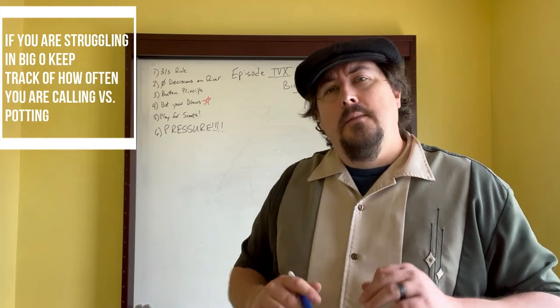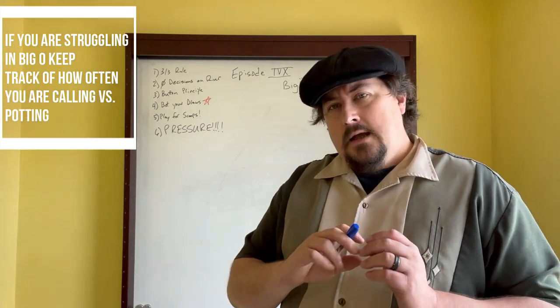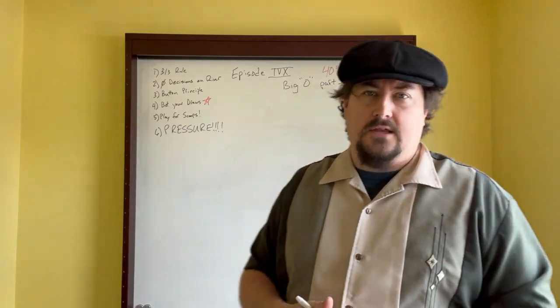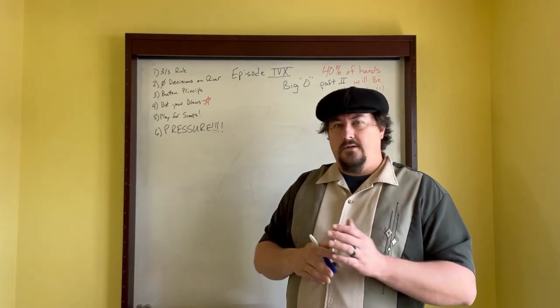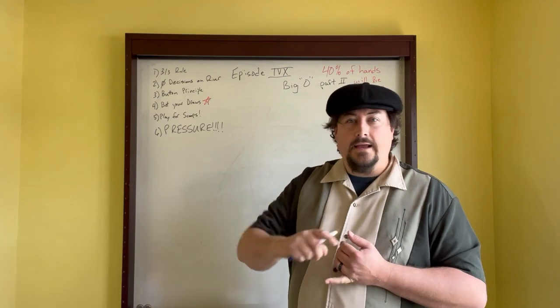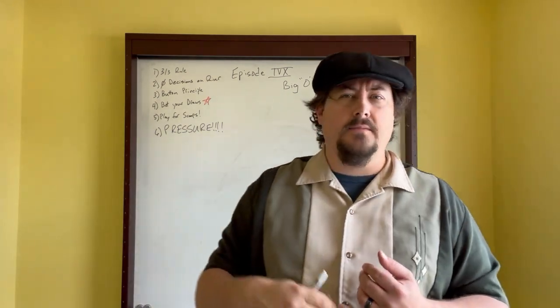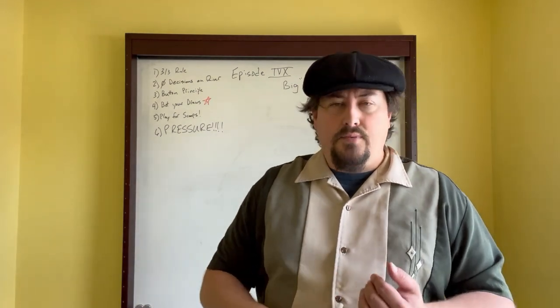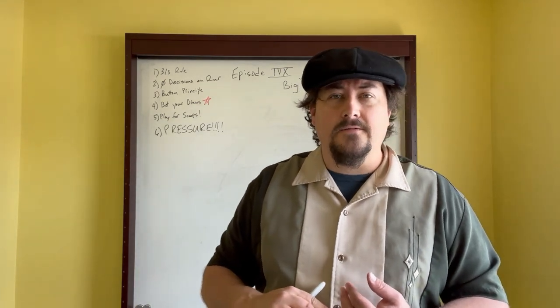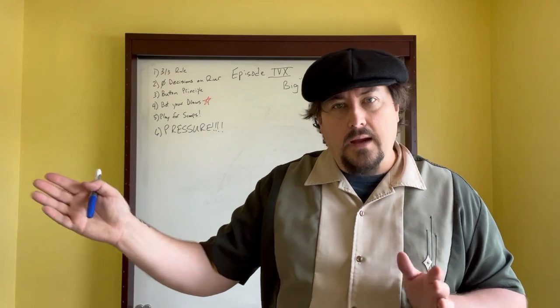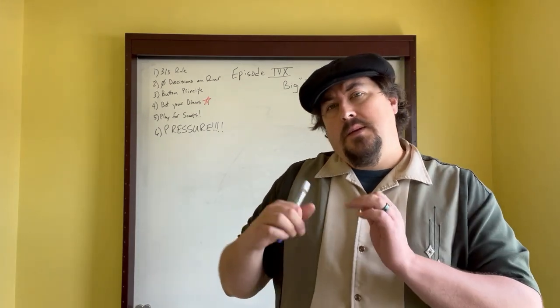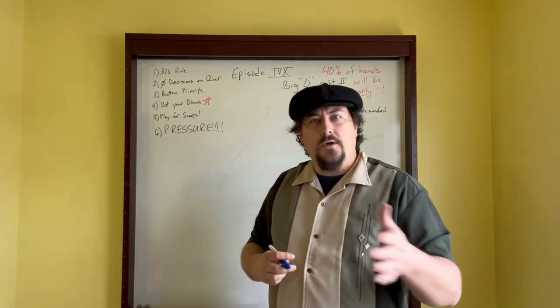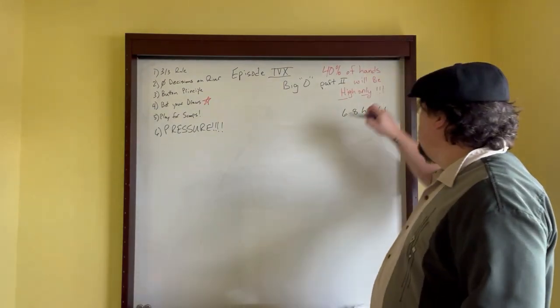I try not to call very much in Big O. I'm usually either potting it or I'm folding. I will open up my range based on the table. If I find the table is a little on the tighter side, I'm going to open up my range and start stretching the limits of that 3-3 principle. I'm going to start being more aggressive with one-way hands that are all high. Something like 10-10 jack king ace, that's an all high hand.